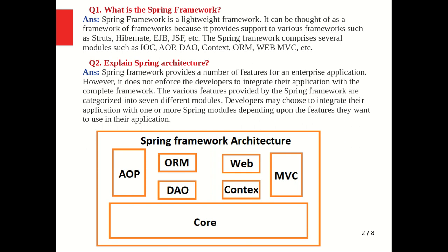The developers may choose to integrate their application with one or more spring modules depending upon the features they want to use. The spring framework architecture contains seven different modules: AOP, ORM, DAO, WebContext, MVC, and the Core module.